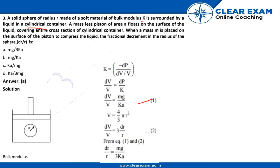Then this is a bulk modulus. So V equals to 4 by 3 pi r cube which is the area of the cylinder. Delta V by V equals to 3 dr by r. Second equation. So here we will from first and second we will find out that mg upon KA equals to 3 dr upon r.